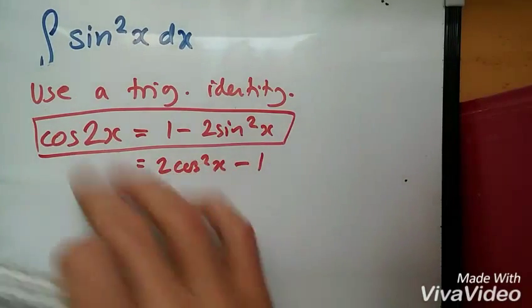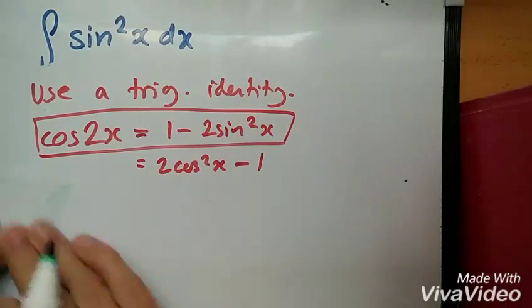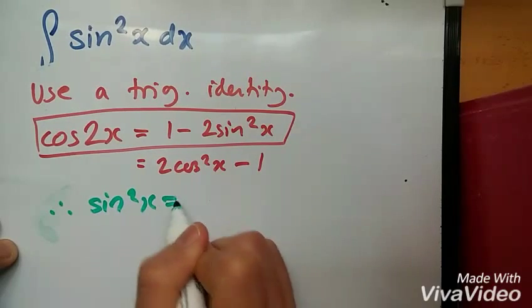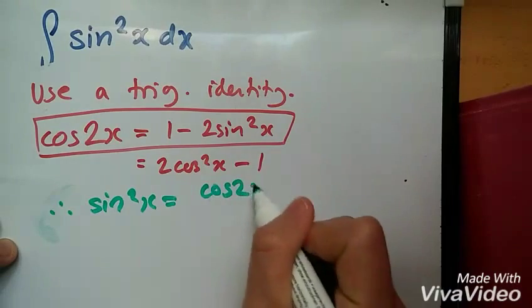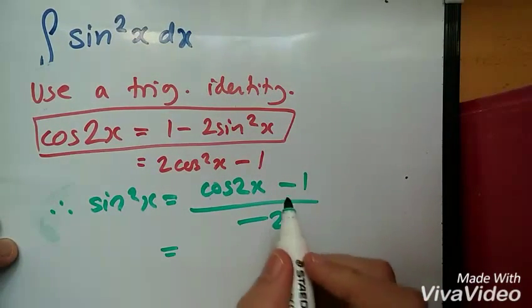So let's rearrange this and put sine squared x as the subject. We're gonna have sine squared x equals minus 1 divided by minus 2 cos 2x minus 1 over minus 2.